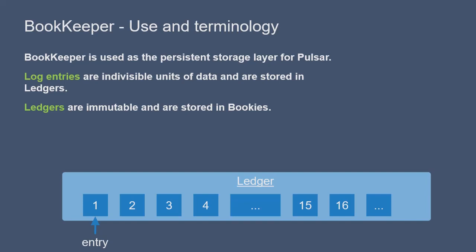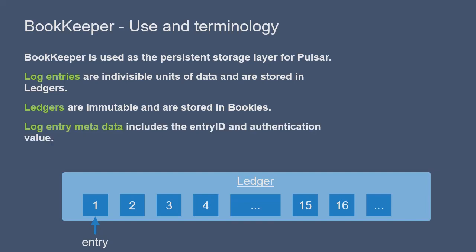Once a ledger is sealed, no new records can be appended to the ledger. Log entries include metadata fields, including the entry ID. The entry ID for a log entry must be unique within a ledger. There's also an authentication value used to identify corrupt entries.